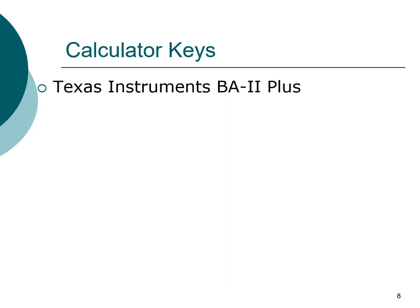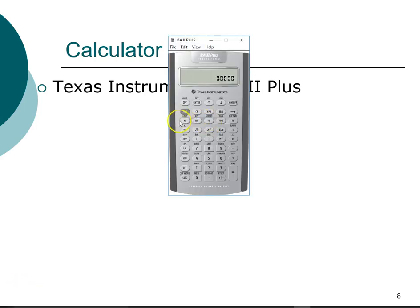On the Texas Instruments calculator, the time value of money registers are located in the center of the calculator. This highlighted line — your calculator may have a different color, but the same registers should be present. These five registers in the center are related to the time value of money. FV stands for future value, PV stands for present value, and so forth.